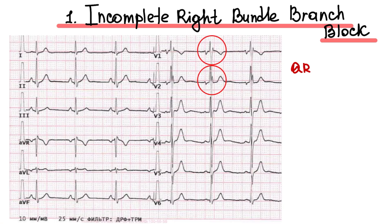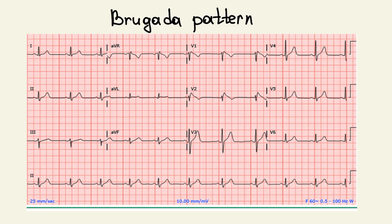QRS duration is less than 0.12 seconds. We can see an RSR pattern in leads V1, V2, and sometimes V3. It's typical for young people and athletes. We always need to differentiate right bundle branch block with Brugada pattern on ECG.